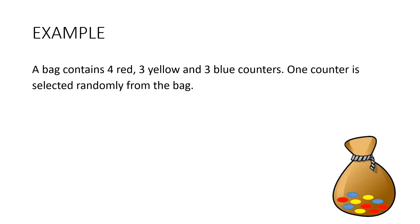Let's look at an example. A bag contains four red, three yellow and three blue counters. One counter is selected randomly from the bag. Find the probability that it's a red counter. So how many ways can I draw a red counter out of that bag? Four.